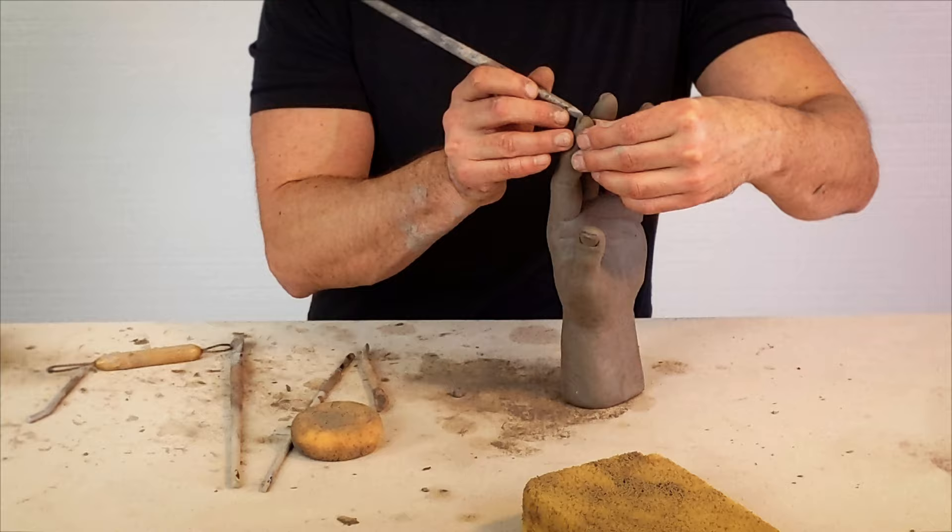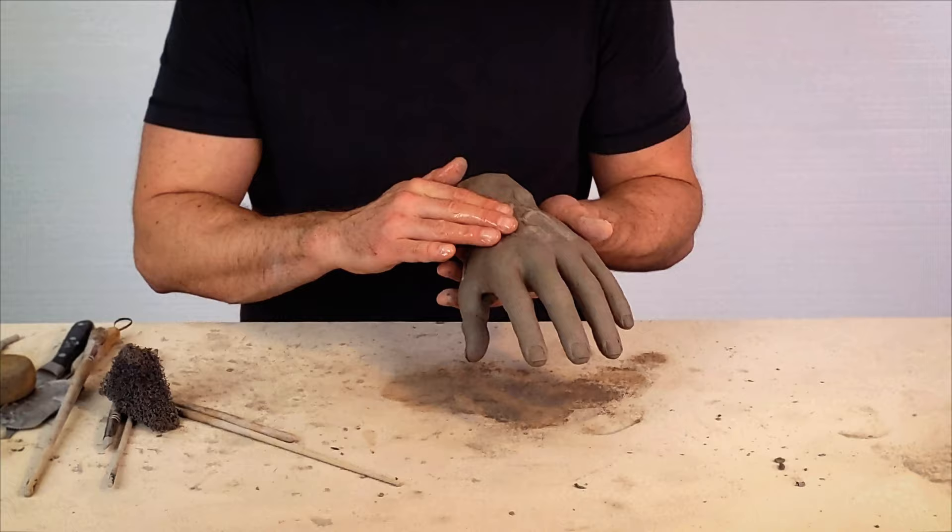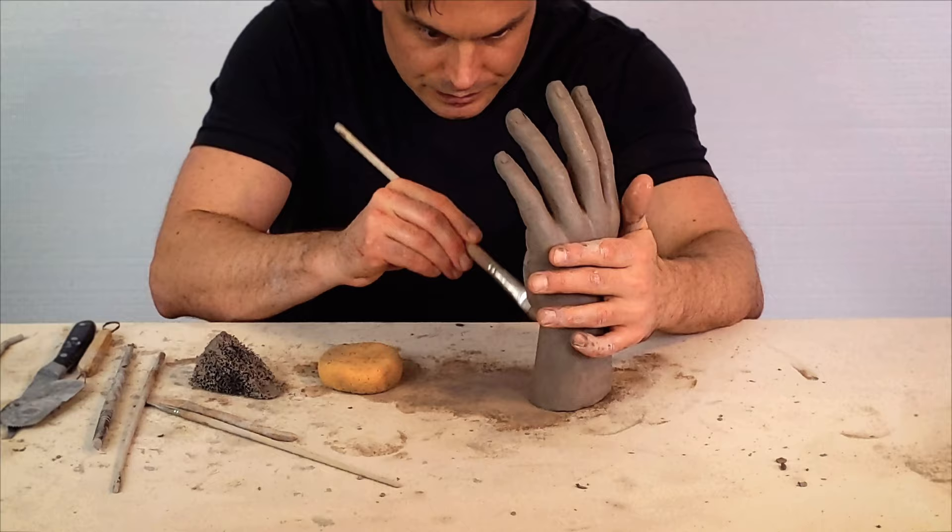Add the wrinkles at the knuckles and the wrist. Add veins to the back of the hand. Then do another more delicate refining pass with abrasives and brushes.